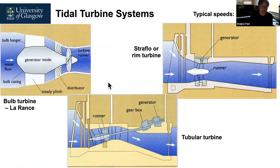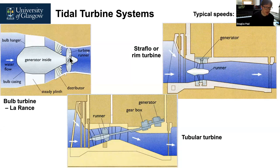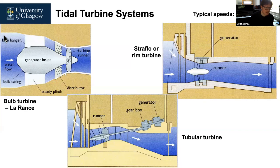At La Rance they used a bulb turbine: a generator inside with water flowing on both sides, a turbine at the back, and distributors to create an even flow pattern over the turbines. Part of the problem with this scheme is that you have to block everything off and shut down the whole generation for a significant period to do any maintenance on the generator.